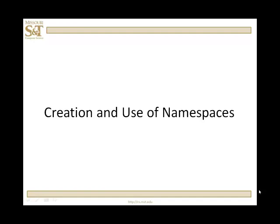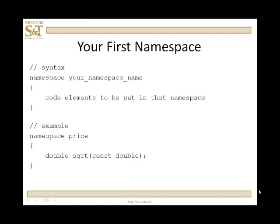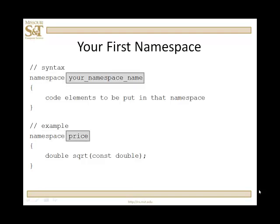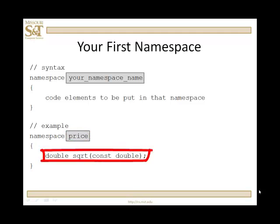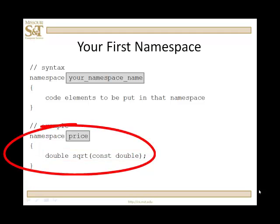There are several namespaces, and we're going to start with how you create your own namespace. The syntax is simply the keyword 'namespace' and then whatever you're going to name it. Suppose we want to create one called 'price' and we're going to put the code for a function that calculates a square root. When I put that code inside these two curly braces, I have, in essence, created a scope for that function.